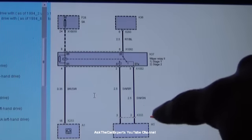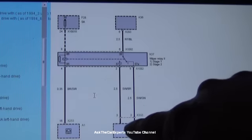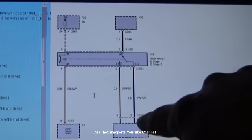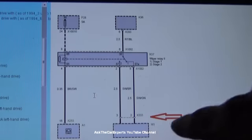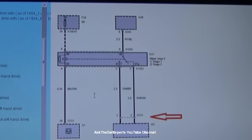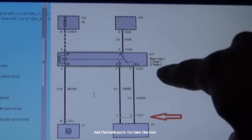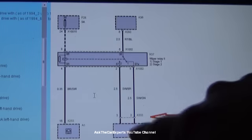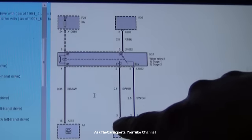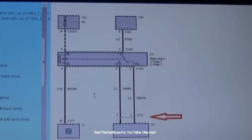You could actually check for voltage at pin 2 and you should see 12 volts with the wiper motor in stage 1. Now if you have stage 2 active, you're actually going to see the voltage at pin 3, which is going to have the wiper motor run faster.